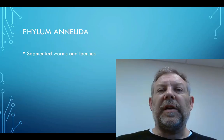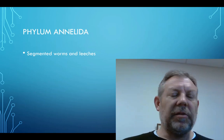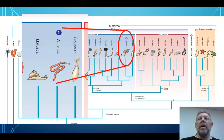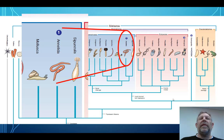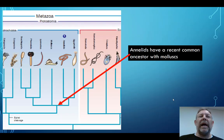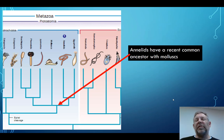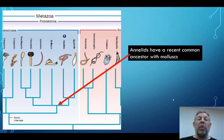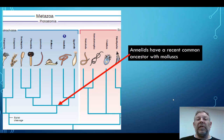Let's talk about our next phylum, the annelids, or phylum Annelida. These are the segmented worms and leeches — organisms you are probably familiar with. If we look at our cladogram, our phylogenetic tree here, we see that the Annelida are closely related to the Mollusca, which we dissected last week. They have a recent common ancestor. If you look at a snail, squid, or clam and an earthworm or a leech, you wouldn't think these two things are closely related.